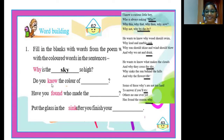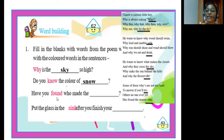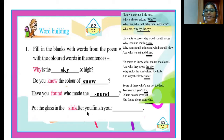In the second question, 'Do you know the color of ___?' the colored word is 'no' and its rhyming word is 'snow.' In the third question, 'Have you found who made the ___?' the colored word is 'found' and the rhyming word is 'sound.' Finally, 'Put the glass in the sink after you finish your ___' — the rhyming word for 'sink' is 'drink.'